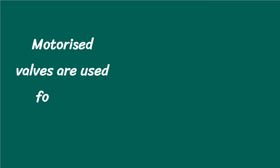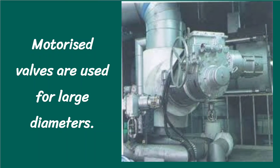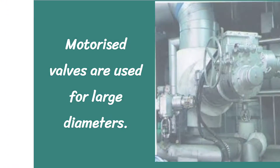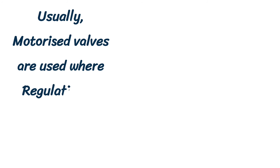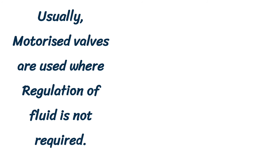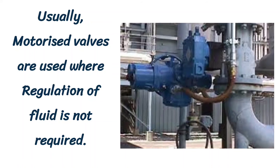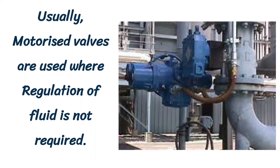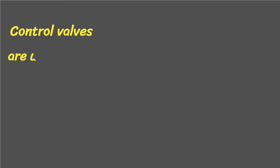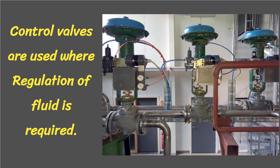Motorized valves are used for large diameters — meaning motorized valves are used when the pipe diameters are large. Usually motorized valves are used where regulation of fluid is not required — in other words, when the parameters are not maintained at a set point. Control valves are used where regulation of fluid is required — or when the parameters are maintained at a set point.